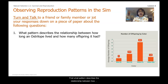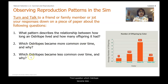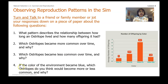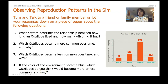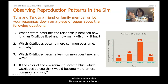Turn and talk to your friend or family member, text them if they're watching with you, or jot your responses down. First: what pattern describes the relationship between how long an australobe lived and how many offspring it had? Second: which australobes became more common over time and why? Third: which australobes became less common over time and why? Fourth: if the color of the environment became blue, which australobes do you think would become more or less common and why? Pause the video, turn and talk, jot your answers down.